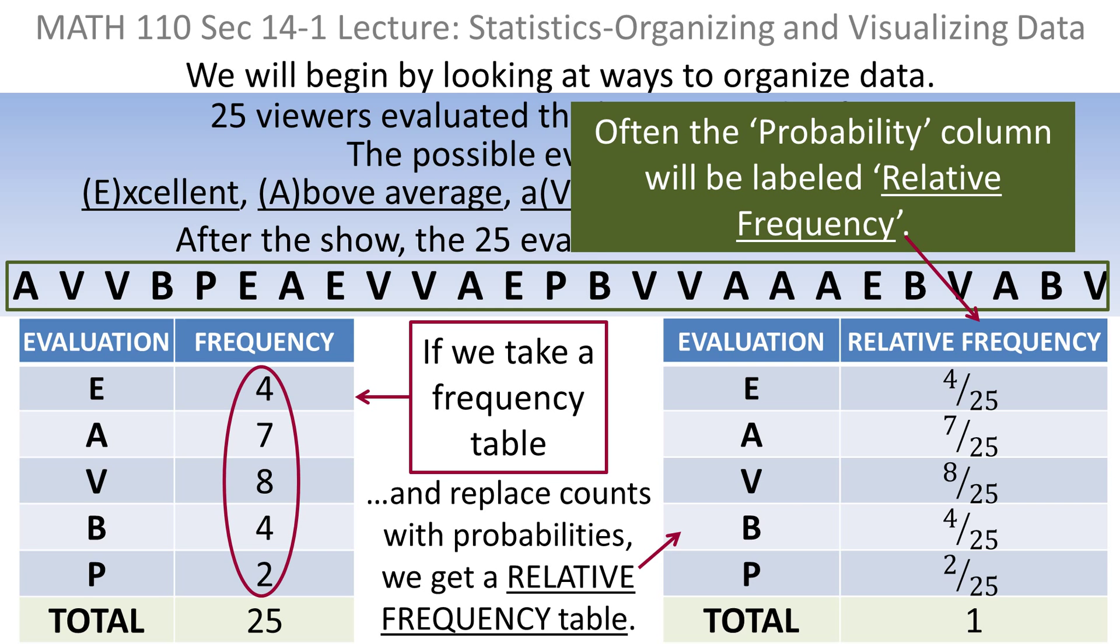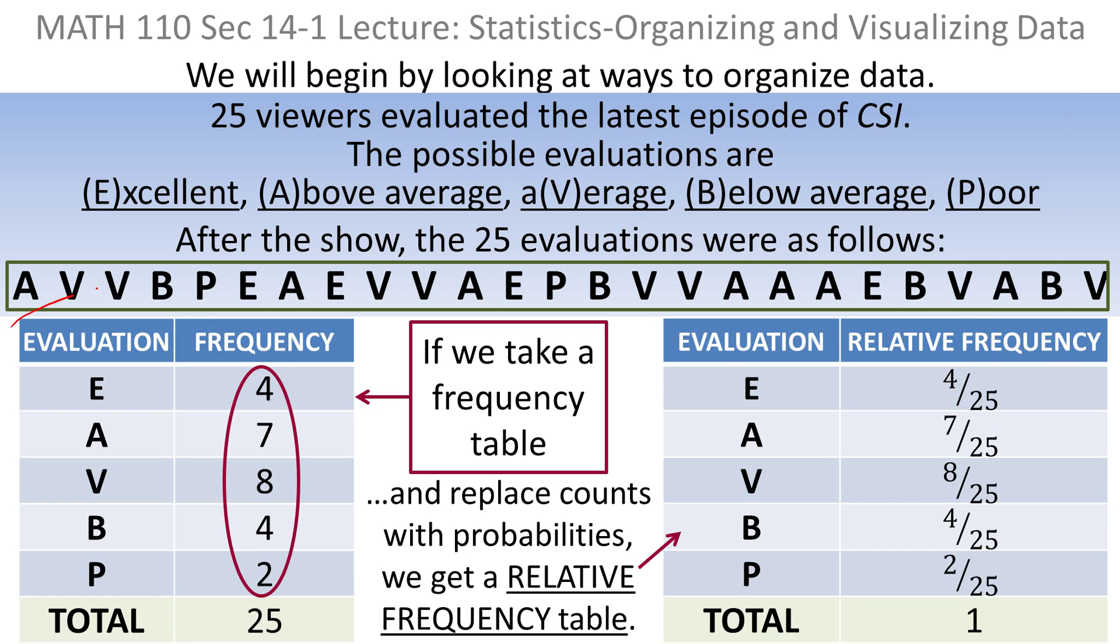Oftentimes, you'll find that the probability column will be labeled relative frequency. So whether you see probability or relative frequency, it's the same thing. The original table would be called a frequency table, and the table with probabilities would be called the relative frequency table.